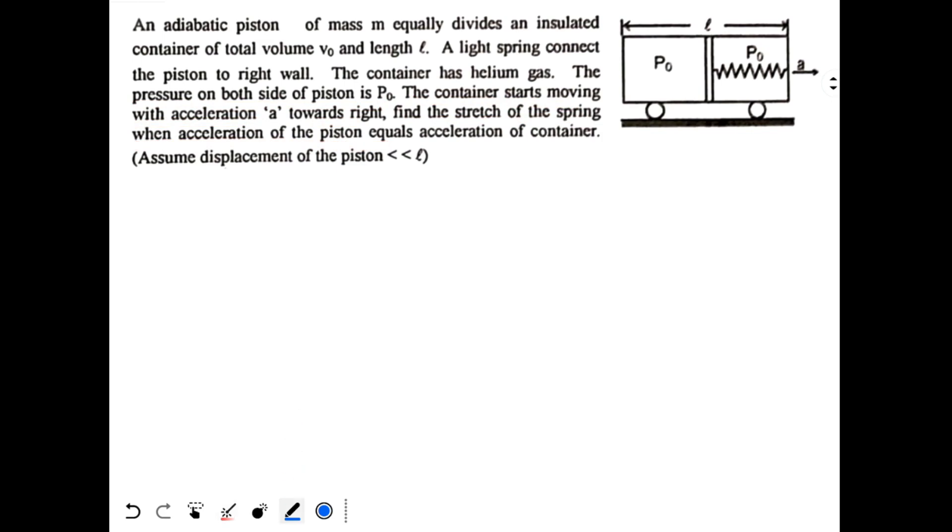So let's say that the piston will get displaced by a distance x. The piston gets displaced by a distance x over here. So volume over here is decreased, volume over here will increase. So in this position if you draw the FBD of the piston.